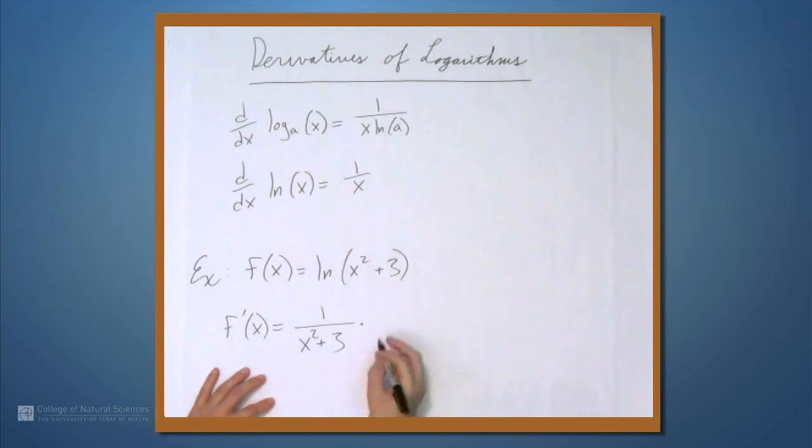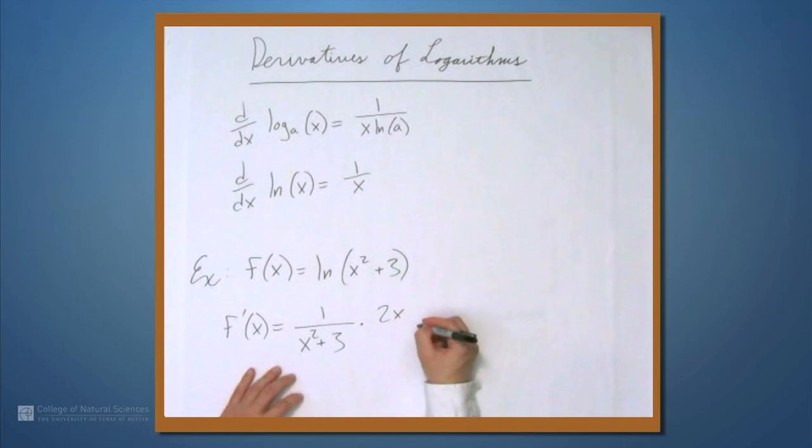And then the chain rule says multiply that by the derivative of what's inside, and the derivative of what's inside is 2x. So we can simplify this. This is 2x over x squared plus 3.